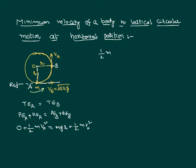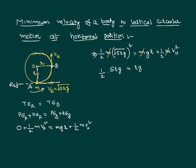Since the body is moving with minimum velocity, v_A = root(5Rg). So: (1/2)m × (root(5Rg))² = mgr + (1/2)mv_h². We can cancel m throughout. This gives: (1/2)(5Rg) = gR + v_h²/2. Multiplying both sides by 2: 5Rg = 2Rg + v_h².